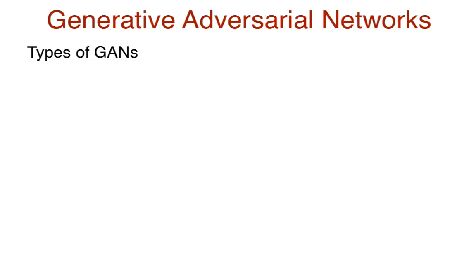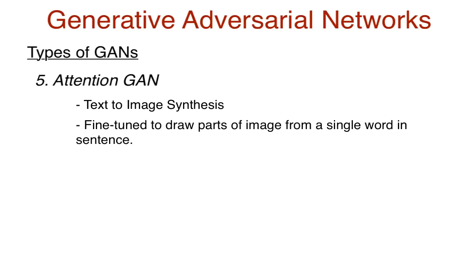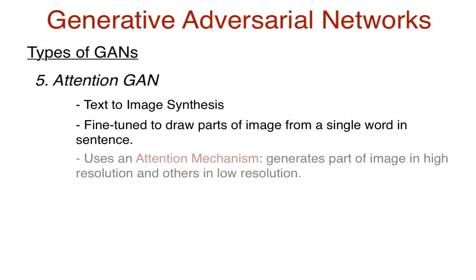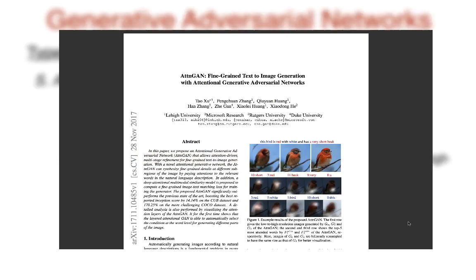There are many other GANs out there, and it is a very hot topic of research. Consider Microsoft's Attention GAN — Attention Generative Adversarial Network. This Attention GAN can create images from text through natural language processing, and performs fine-grained tasks like generating parts of an image from a single word in the description. It does this through an attention mechanism where the generator focuses on generating parts of an image in high resolution and other parts in lower resolution. As the context of the words becomes more known, the surrounding parts of the image increase in resolution over time, until we get an image that closely corresponds with the words in text.